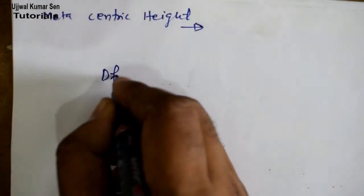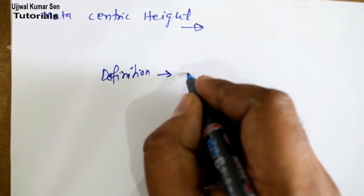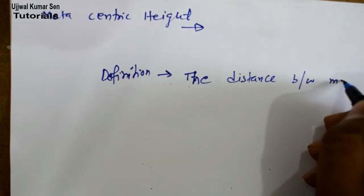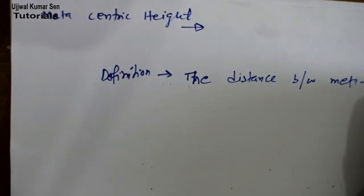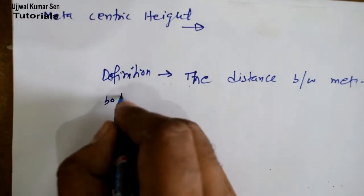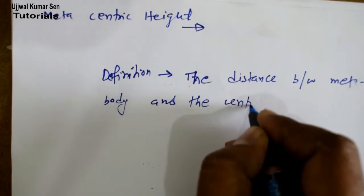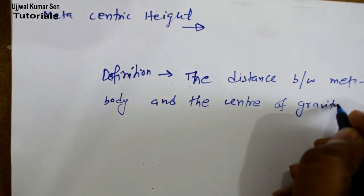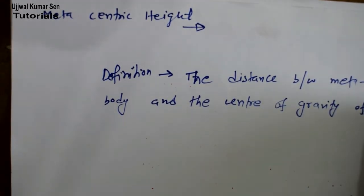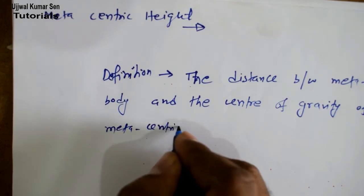What is the definition of metacentric height? The definition: The distance between meta center of a floating body and the center of gravity of the body is called metacentric height.